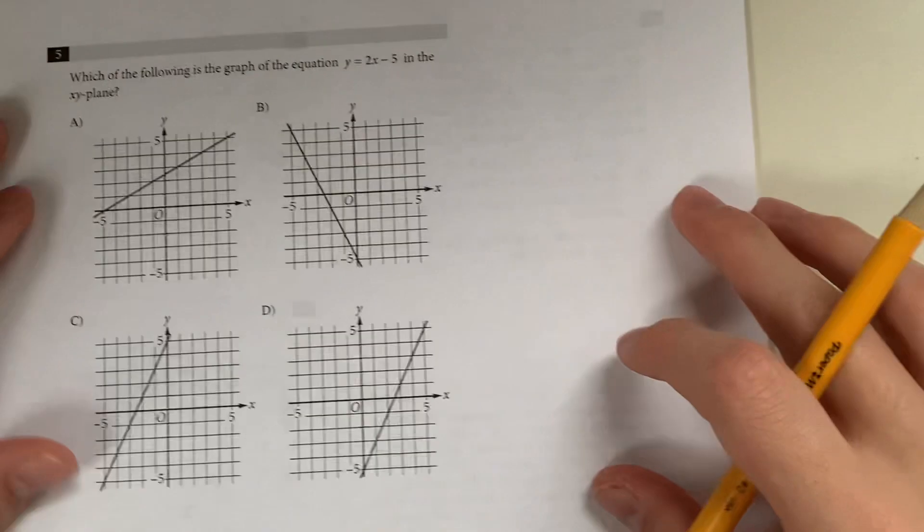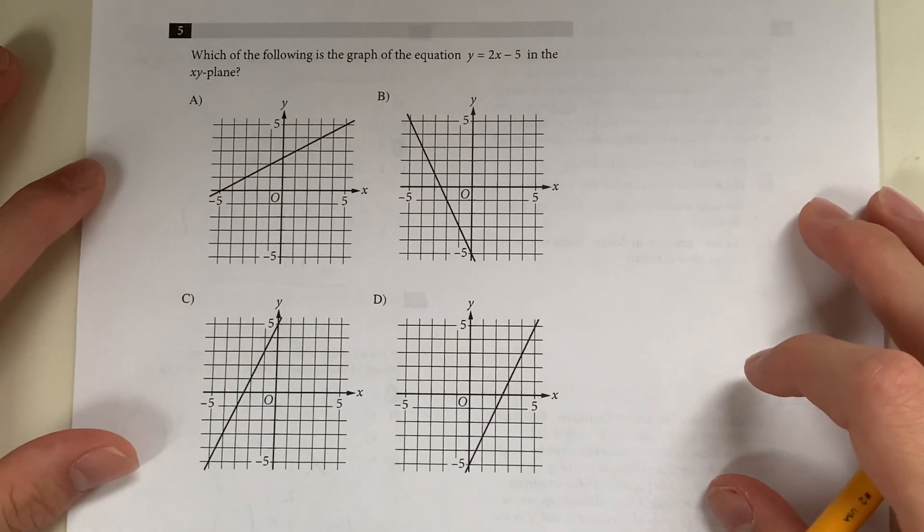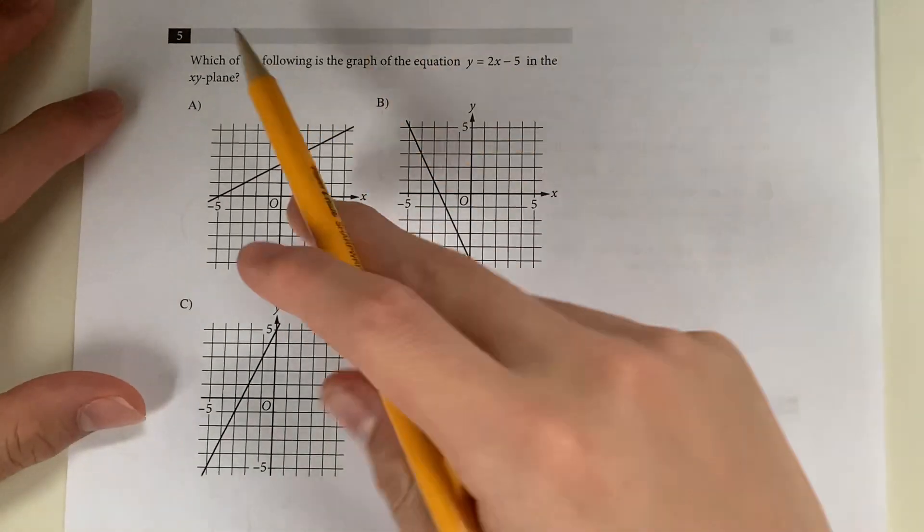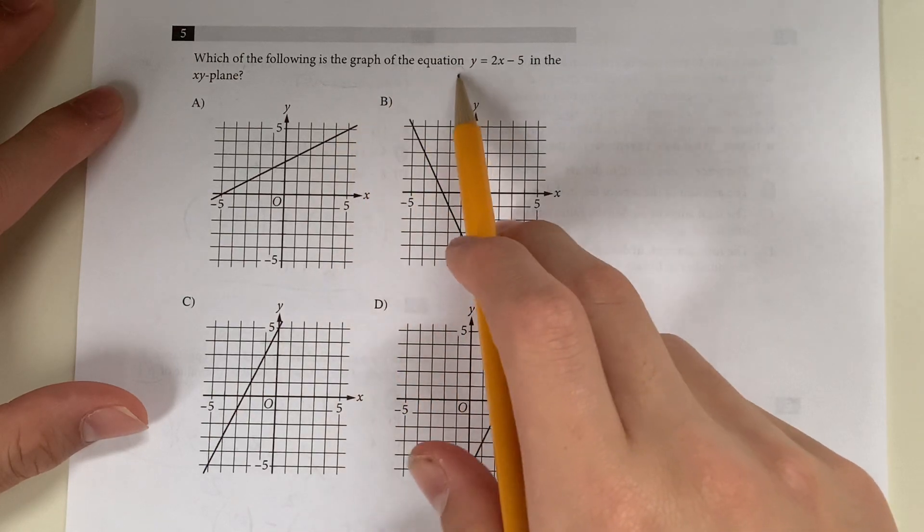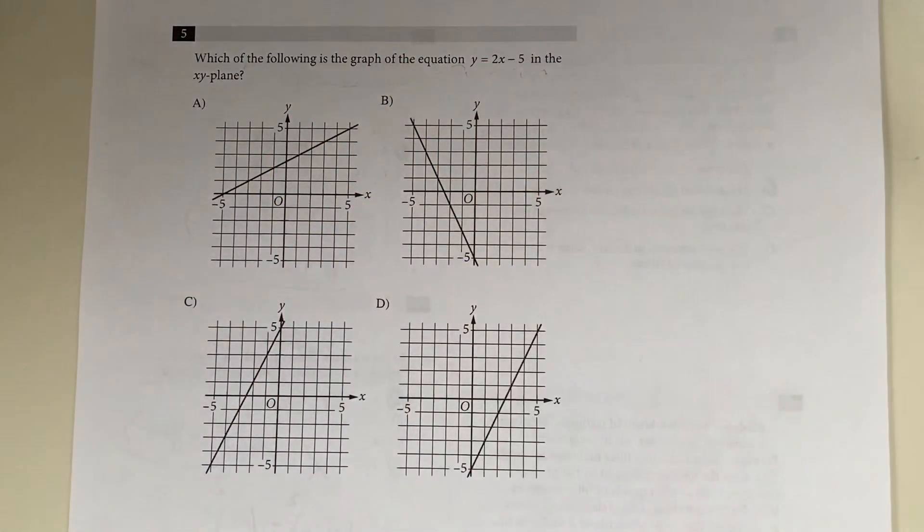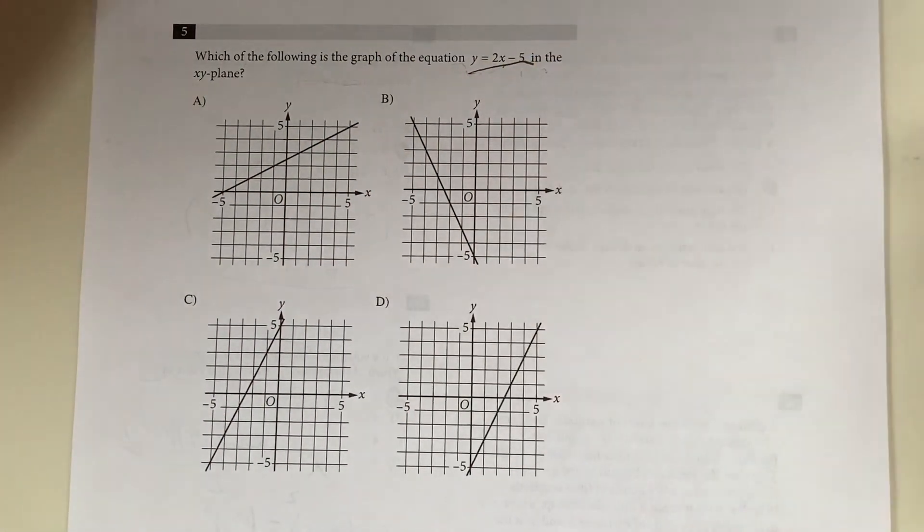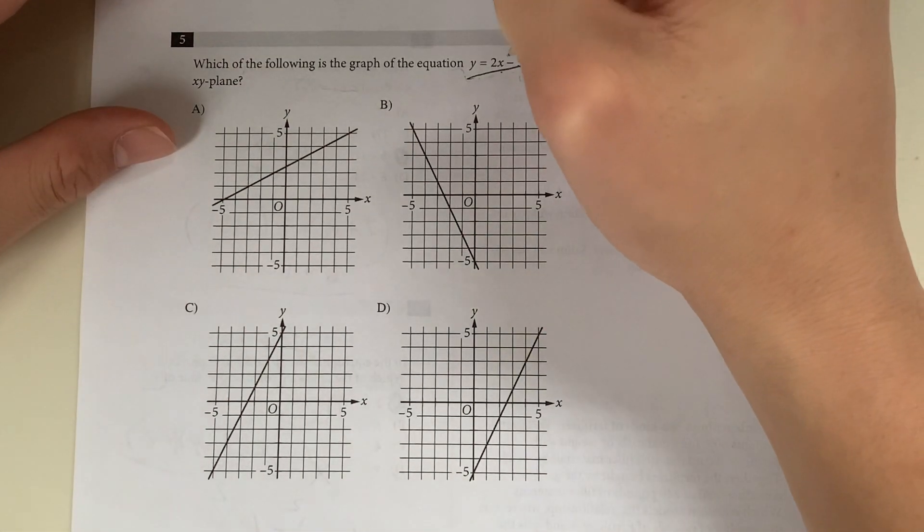Let's go on to question 5. Which of the following is the graph of the equation y equals 2x minus 5 in the xy plane? This is written in slope-intercept form, so let's look at the intercept first.